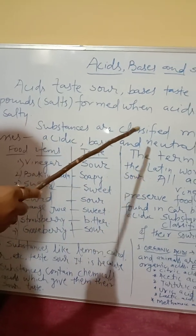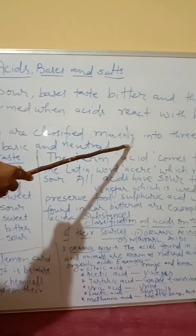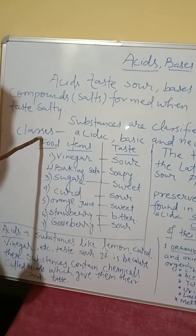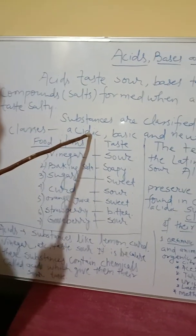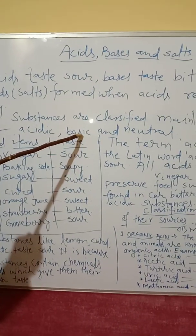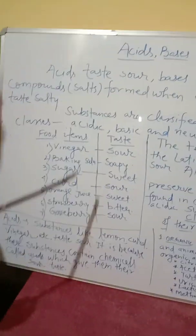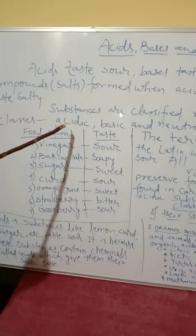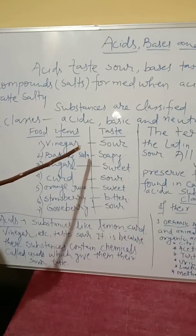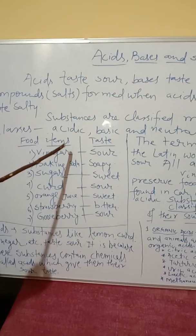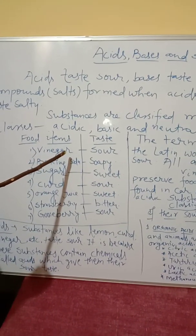Substances are classified mainly into how many classes? Three classes: acid substances, basic substances, and neutral substances. Now just see — every day we are eating and going through the taste of different food items.